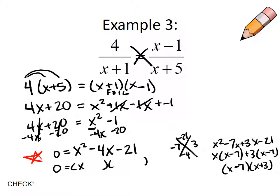Our factors are x minus 7 and x plus 3. If I set each factor equal to 0, I should end up with a 7 and a negative 3.